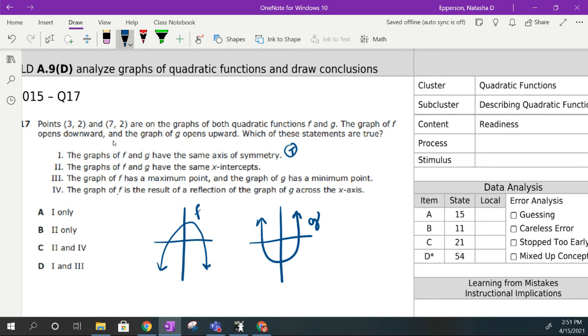f and g have the same axis of symmetry. If they have the same coordinate points, they are going to have the same axis of symmetry. The f and g have the same x-intercepts. We can't really say that. Not with the information given to us. F has a maximum point. F definitely has a maximum point. And g has a minimum point. That is definitely true.